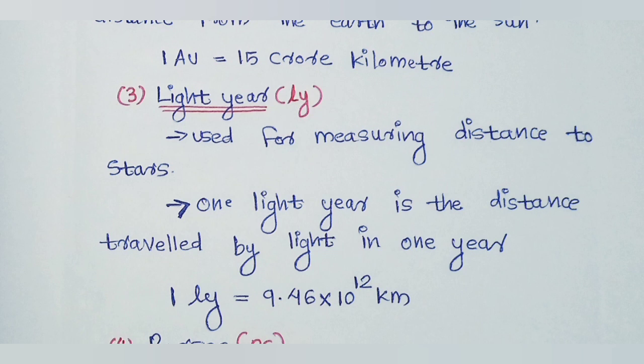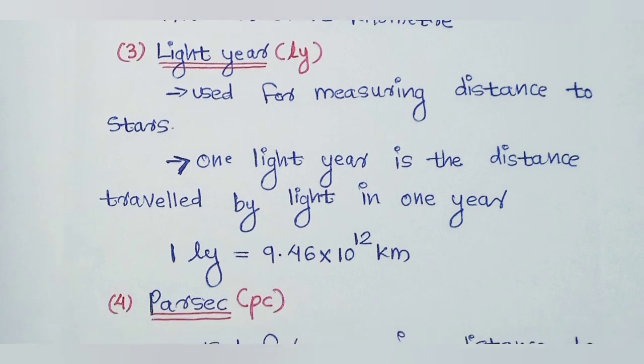The average distance is approximately 1.0 × 10⁵ m in some contexts. The light year has an approximate value of 9.46 × 10¹² km.